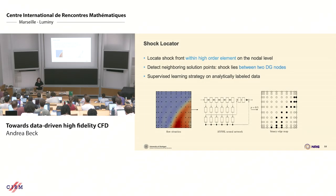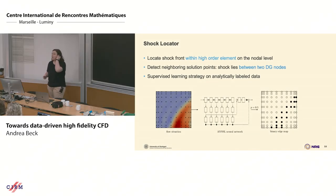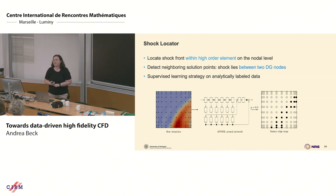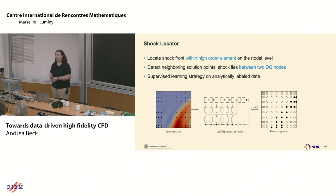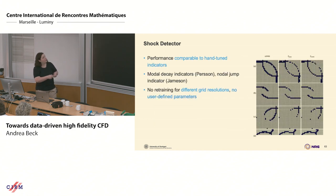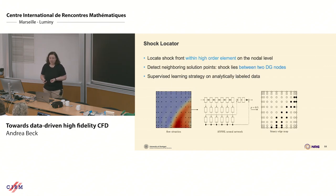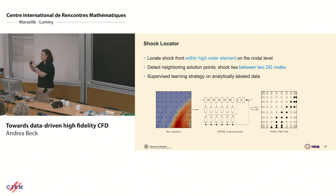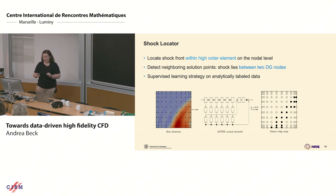Welcome back to the second part. We are still on supervised learning examples, combining supervised learning with DG schemes and shock capturing — locating where a shock is occurring in the flow in an element. We've successfully done that, and now the idea is: can we go one step further and locate the shock on the sub-element level?